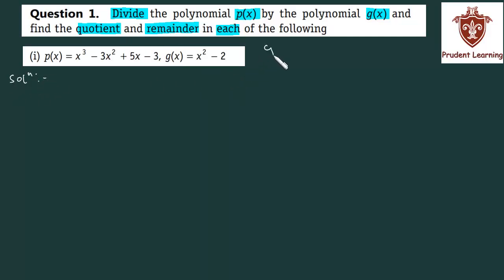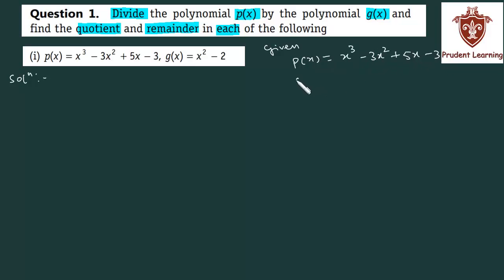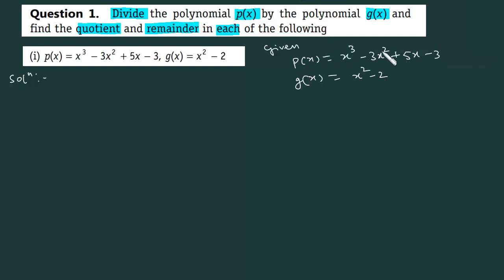सबसे पहले given देख लेते हैं. We are given polynomial px as x cube minus 3x square plus 5x minus 3. और gx given है as x square minus 2. Since we have to divide the polynomial px, इस तरफ से यह आपका dividend है जिसको divide करते हैं. और जिससे divide करते हैं, इस बार gx से divide करना है, वो आपका divisor है.